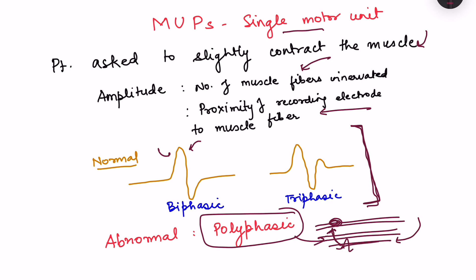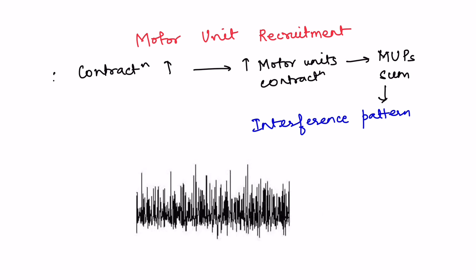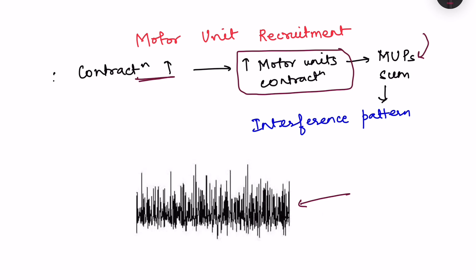The fourth type is the recruitment pattern — the interference pattern recorded when we ask the person to contract the muscle maximally. With increased motor unit contractions, all motor unit potentials sum up and the baseline is obliterated. At rest the baseline is flat, but with maximal contraction the baseline is completely obliterated — this is the interference pattern. Those were the different types of recording obtained in electromyography.